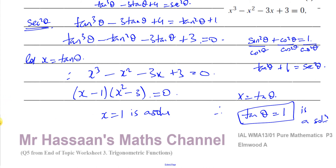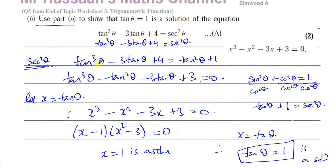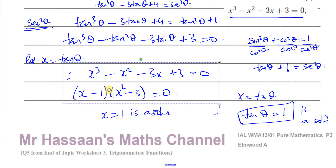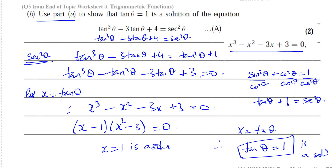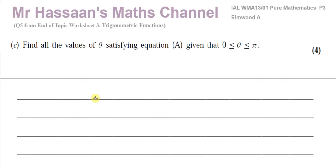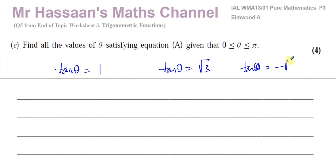So that's part (b): we showed the equation reduces to the same form as part (a) with tanθ in place of x. The three solutions from the factorization are tanθ = 1, tanθ = √3, and tanθ = -√3. Part (c) says: find all values of θ satisfying the equation given that θ is between 0 and π.